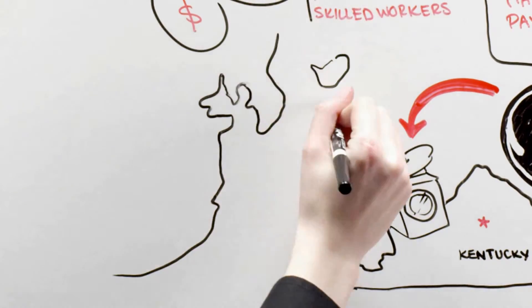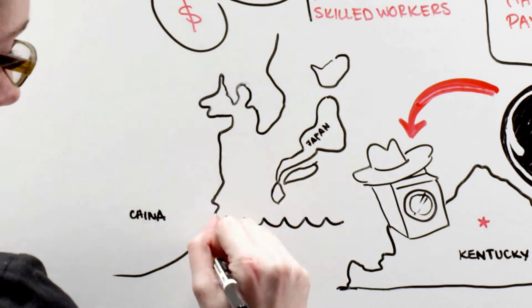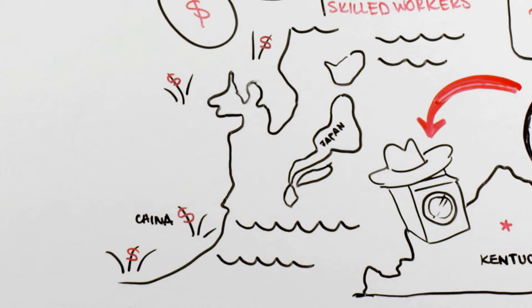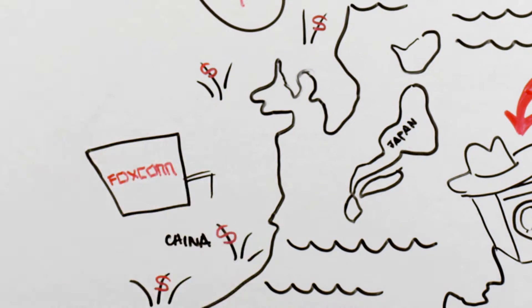Besides higher overseas costs, other factors bolster the argument that the grass isn't always greener in India, China, or Malaysia. A case in point is Apple's relationship with China-based Foxconn.